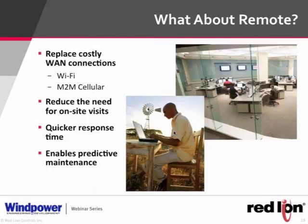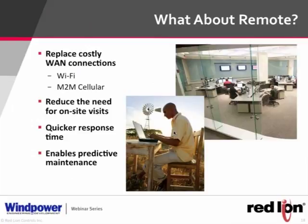With cellular and Wi-Fi, remote connectivity is much more cost-effective. Wi-Fi communication is unlicensed — you pay for the radio upfront and that's it. Cellular M2M connections carry a low monthly data cost, far cheaper than a T1. This reduces the need for on-site visits, enables quick response times, and enables predictive maintenance — shifting from reactive to proactive operations.